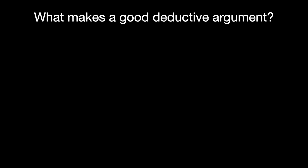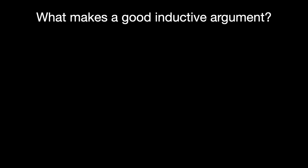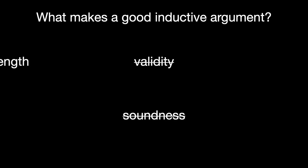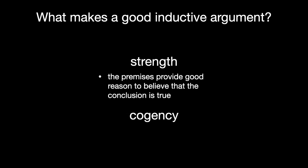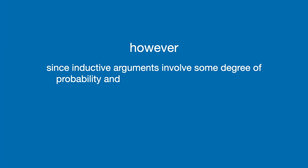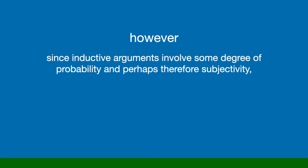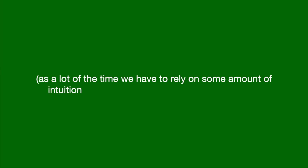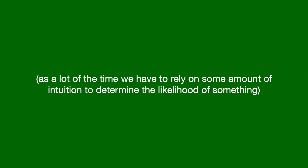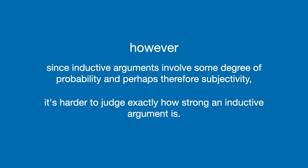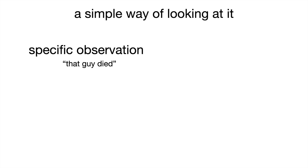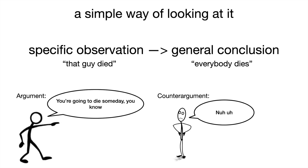There are also two measurements of what makes a good inductive argument, and they're essentially just different names for validity and soundness — they're called strength and cogency. An inductive argument is strong when its premises provide good reason to believe that the conclusion is true. However, since inductive arguments involve some degree of probability and perhaps subjectivity, it's harder to judge exactly how strong an inductive argument is. But here's a simple way of looking at it: since inductive reasoning takes specific observations to form a broader conclusion, the more specific observations you have, the stronger the argument.